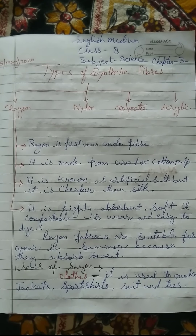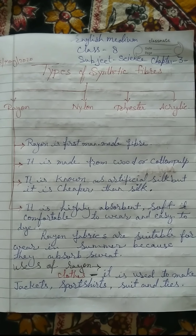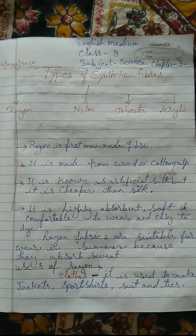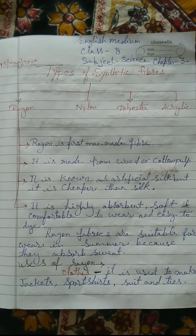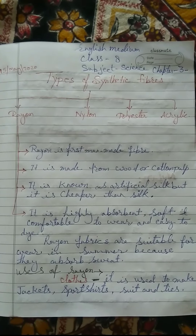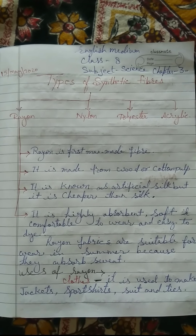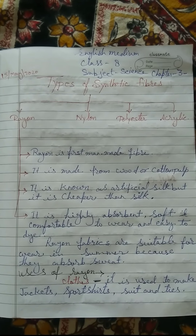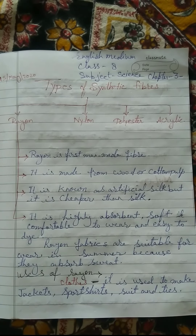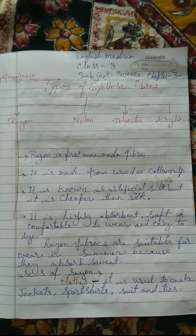Good afternoon class. Subject: Science, Chapter 3 - Synthetic Fibers and Plastic. Types of synthetic fibers: rayon, nylon, polyester, acrylic. Rayon is the first man-made fiber. It is made from wood or cotton pulp and is known as artificial silk.